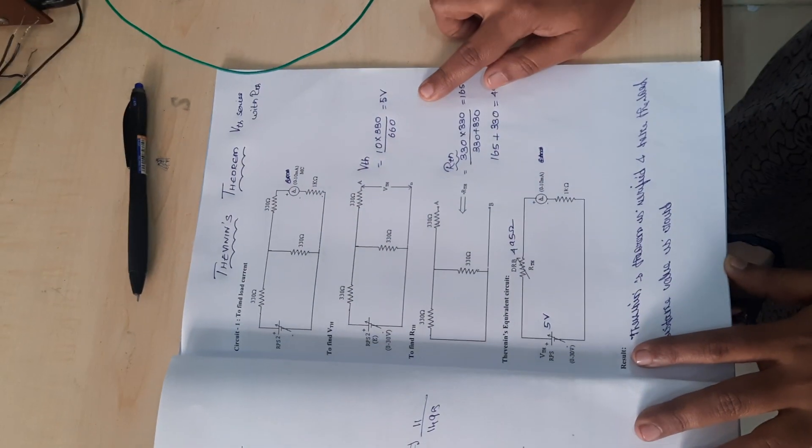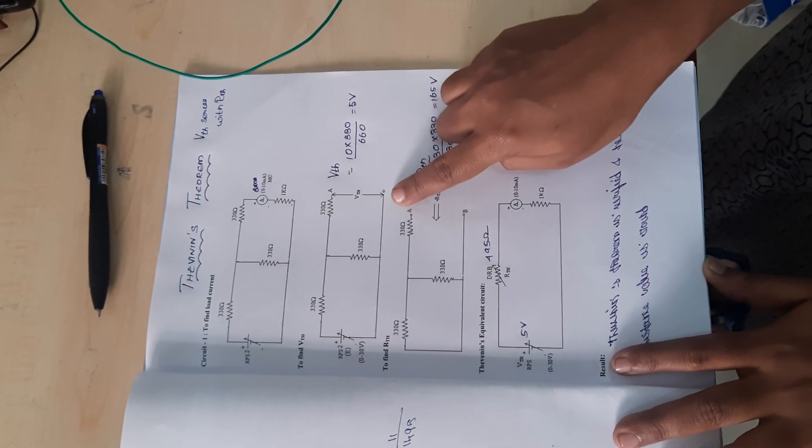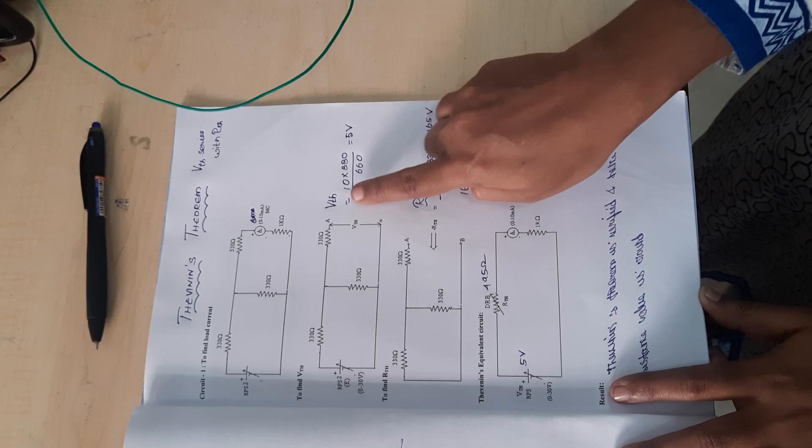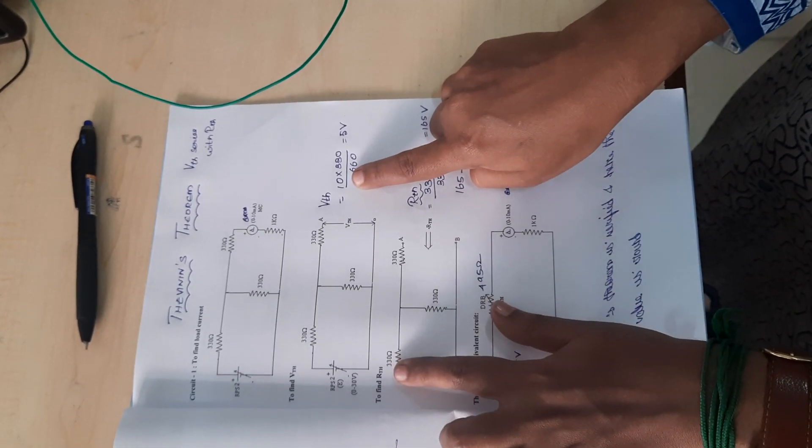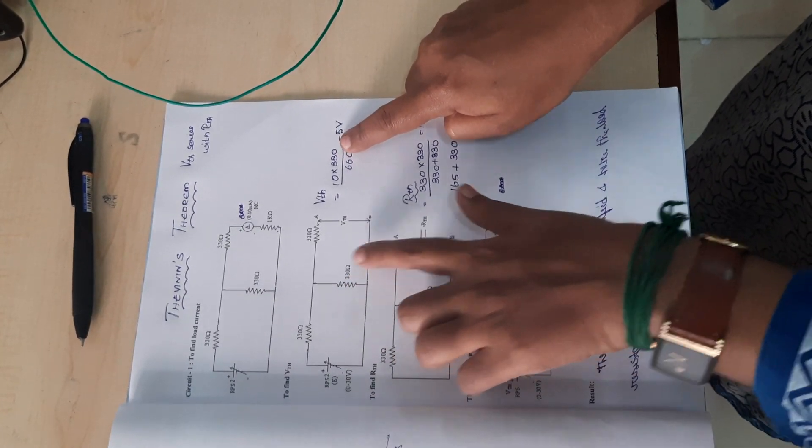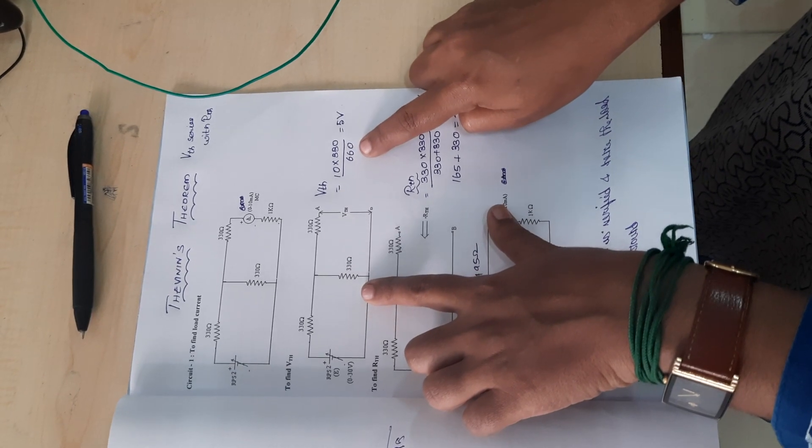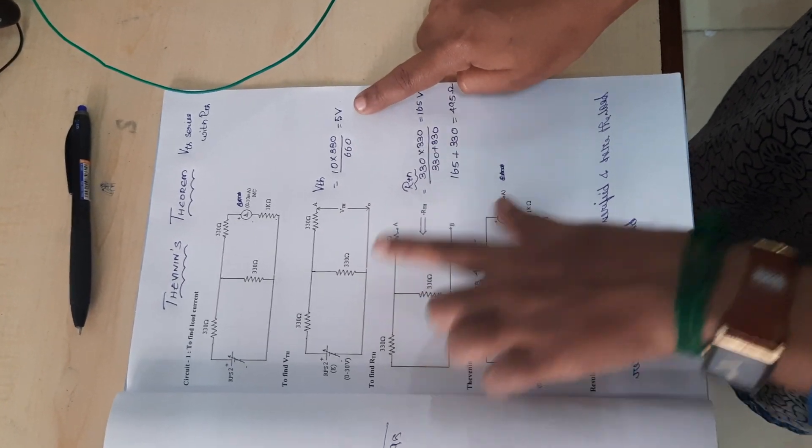Now we'll see the V-Thevenin calculations using voltage division rule. For V-Thevenin, the voltage is 10V and the resistance is 330 ohms, with a total resistance of 660 ohms. This gives us 5 volts.